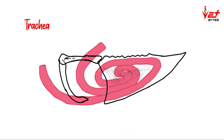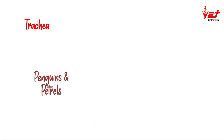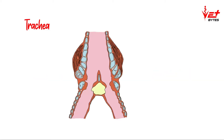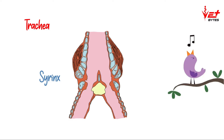The trachea is much more complicated in case of the whooping crane. In some birds like penguins and petrels, the tracheal lumen is divided into two by a septum, which gives an appearance of a double trachea. At the bifurcation of the trachea there is an organ called the syrinx, which is responsible for production of voice in birds and is also called the organ of voice.